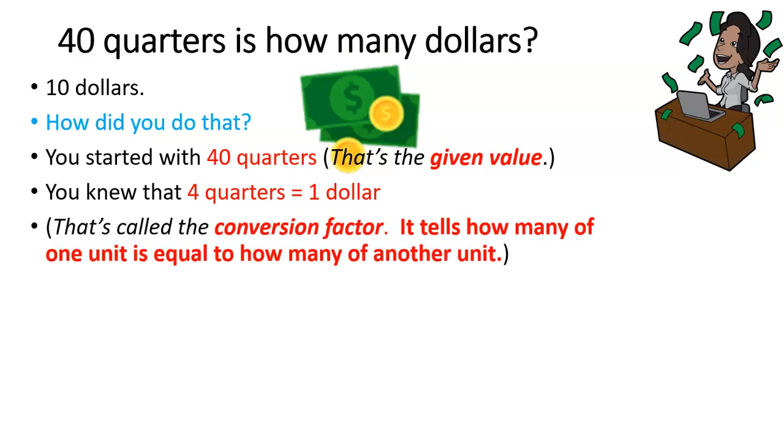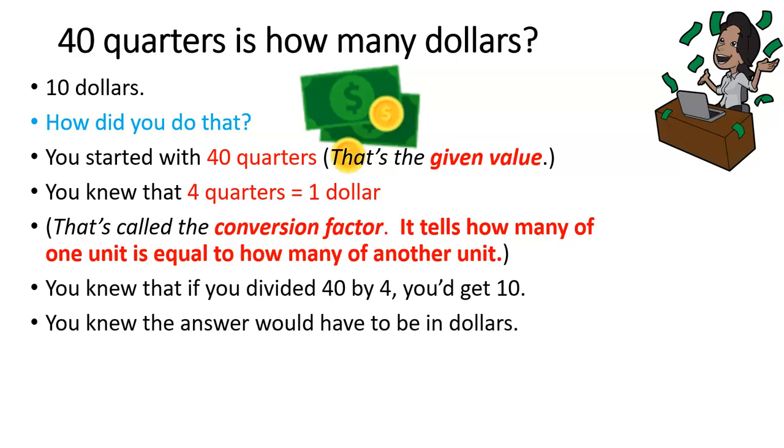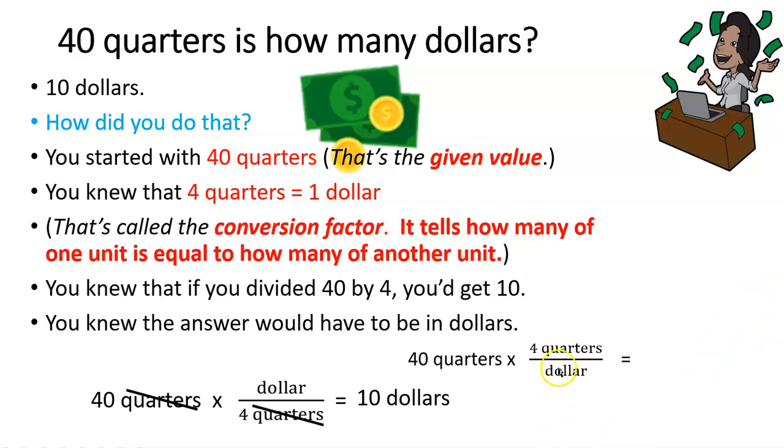It tells how many of one unit is equal to how many of another unit. You knew that if you divided 40 by 4 that you get 10, and you knew the answer would have to be in dollars. Now, the chances are extremely good that nobody went through the trouble of doing this, but what they did essentially equaled or amounted to taking 40 quarters and realizing that you had to divide by 4, and you also realized that your answer had to come out in dollars. So you essentially did that. Now, in the very unlikely chance that you would have gotten, again, this is called a conversion factor, that you would have gotten your conversion factor upside down, which is an extremely common mistake in dimensional analysis.